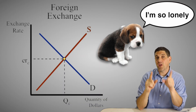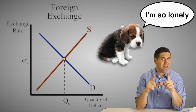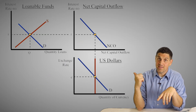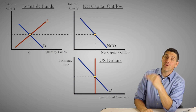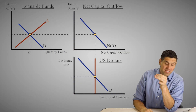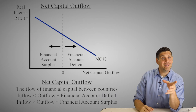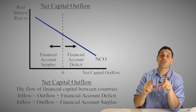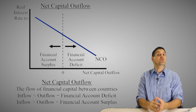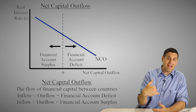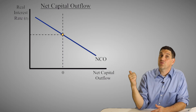But what about the last graph, the foreign exchange market graph? That's not really connected to any of the others — except it is. This shows the loanable funds market, which sets the real interest rate and its effect on net capital outflow. This is connected to the balance of payments and the financial account — the idea of foreigners buying financial assets in another country. So what determines if foreigners buy our assets or if we buy their assets? The real interest rate.